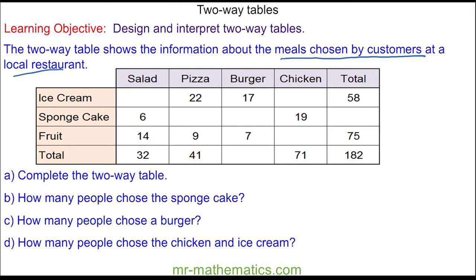There are a few ways of doing this, but I'm going to begin by working out the total number of people who had a burger. This would be the difference between 182 and the other three values, so this is 38 people.